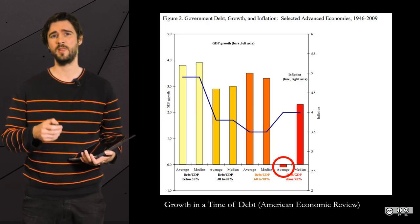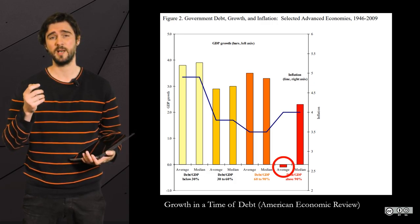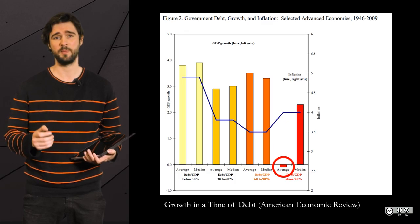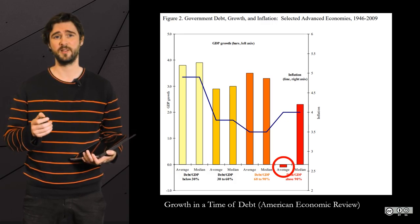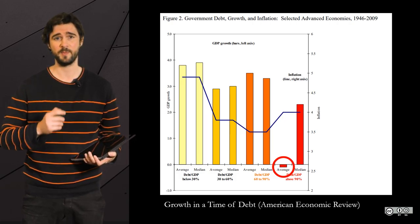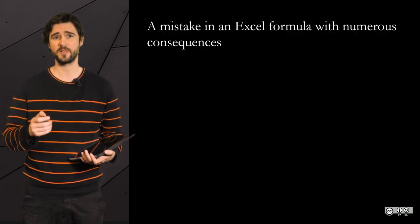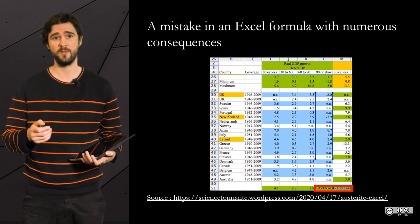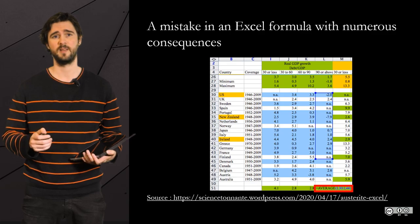Their thesis is that when the debt went beyond 90%, economic growth tended to decrease sharply. However, Thomas Herndon, a then-student, failed to reproduce their results for an assignment. He asked the authors for their original dataset, and they provided it in the form of an Excel datasheet.